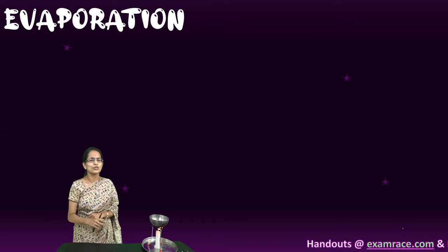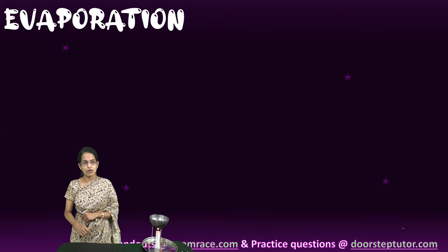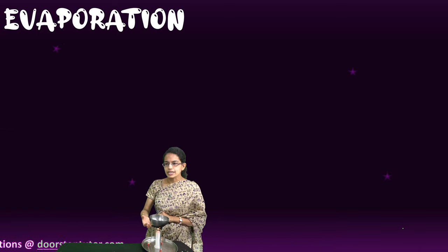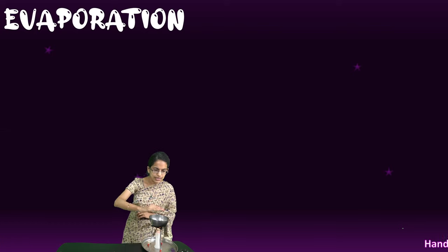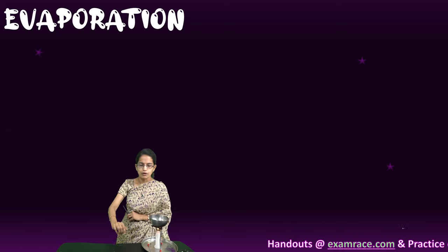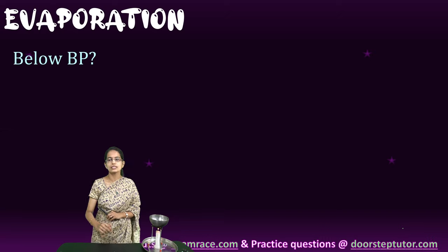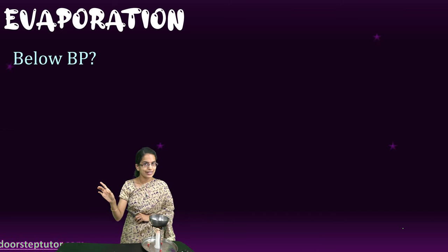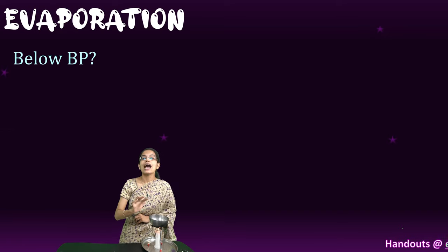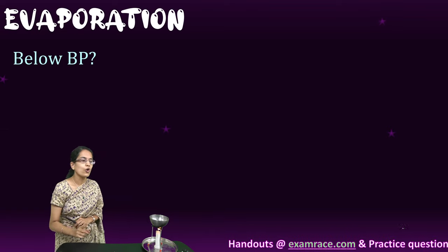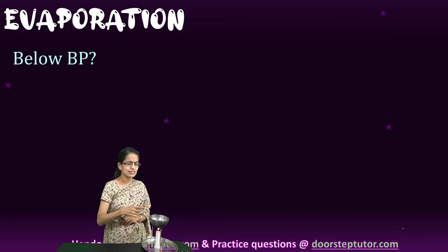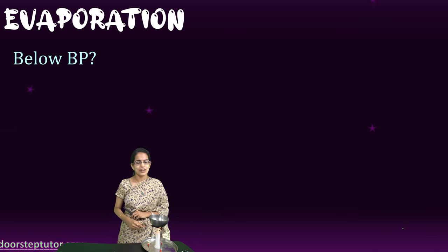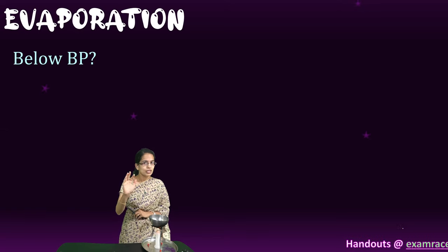The next technique is evaporation. You may have noticed the candle burning throughout — we have a bowl of clear water with a candle below it, heating the water. As you can see, small vapors come out, and this is the evaporation process. Importantly, evaporation can occur even below the boiling point — the water does not need to reach 100 degrees Celsius to start producing vapors. As heating increases, the rate of evaporation increases. If you rewind the video, you'd see fewer vapors at the start compared to now.